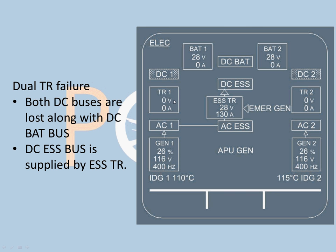Dual TR failure: both TRs have failed, so there is no DC connection at all. Both DC buses are lost along with the DC bat bus. DC essential bus is supplied by the essential TR via generator 1. This is a critical case — since you have no DC power from the normal buses, the essential TR ensures that components running on DC via the DC essential bus are still powered. DC bus 1 and DC bus 2 are completely lost.